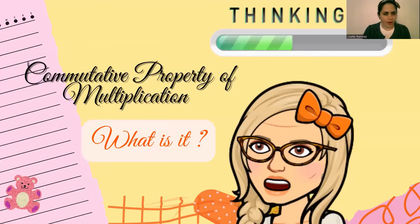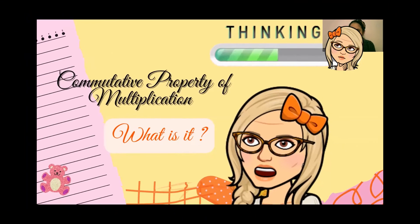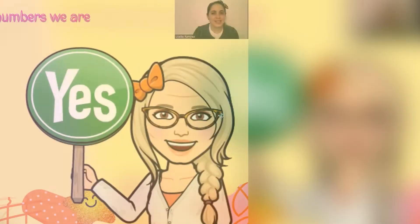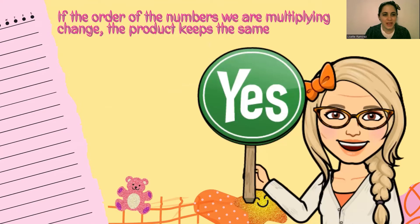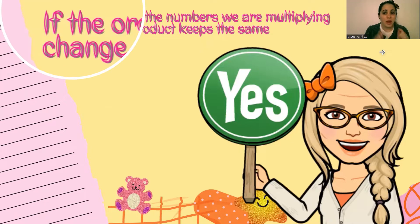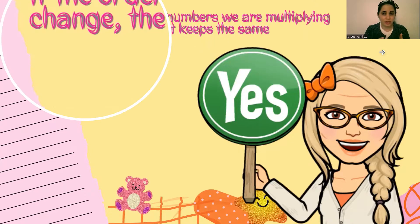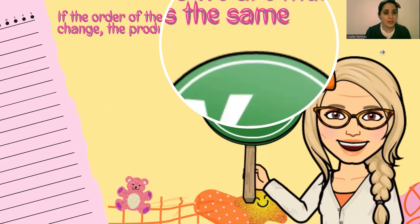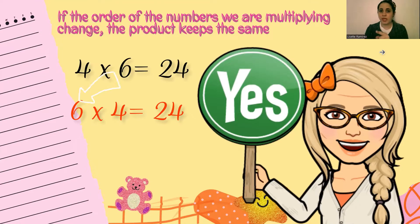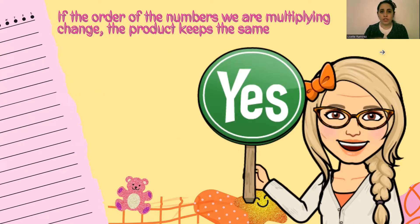What is the commutative property of multiplication? The commutative property of multiplication states that if the order of the numbers that we're multiplying changes, the product still remains the same. So we can switch the factors and the product will always be the same, because the order of the factors does not affect the product.